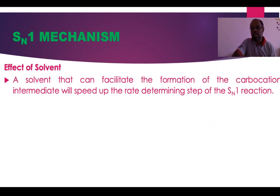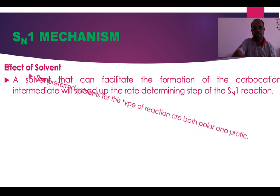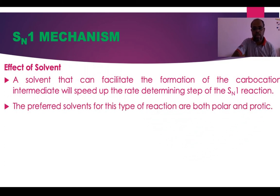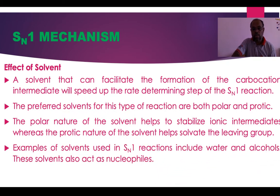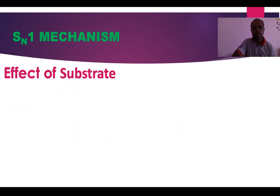In SN1, a solvent that facilitates the formation of the carbocation intermediate will speed up the rate of reaction. Generally, polar protic solvents facilitate SN1 reactions because they stabilize the ionic intermediate. Water and alcohol are the best solvents for SN1 reactions.